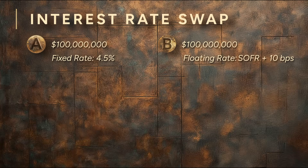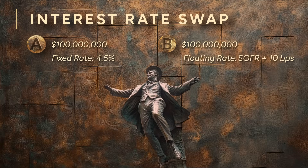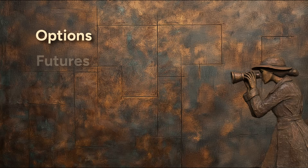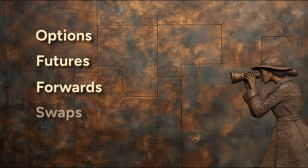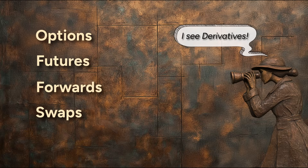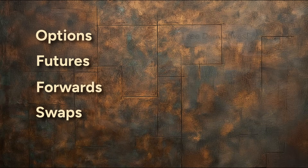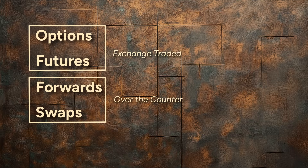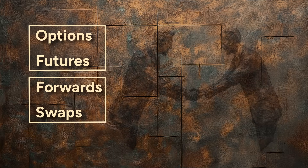This is how interest rate swaps work: one company trades fixed-rate certainty for floating-rate risk, the other does the reverse. Big players — corporations, banks, hedge funds — use swaps to tweak their rate exposure. Sometimes the swap is direct, but often banks step in as middlemen, taking a fee, of course. There's no free lunch on Wall Street. Options, futures, forwards, swaps — four popular derivatives in finance. But there's no limit to what you can build. Exchanges give you plenty of options and futures, but big banks and hedge funds use the OTC market for forwards and swaps. And if you ever need something truly bespoke — well, if you're wealthy enough, there's always someone willing to make a deal.